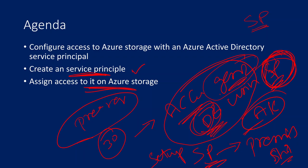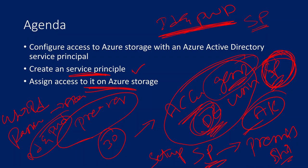So firstly, how to set up a service principal, and also we need to understand what a service principal is. Think of a service principal like your user ID — you usually have a user ID and a password to connect to Azure. Similarly, a service principal is also an ID and password, but there is no human behind it. It is like a virtual ID and password — a randomly or virtually created ID and password in Azure Active Directory. Using this ID and password, you can access any Azure resource by assigning proper roles to it.